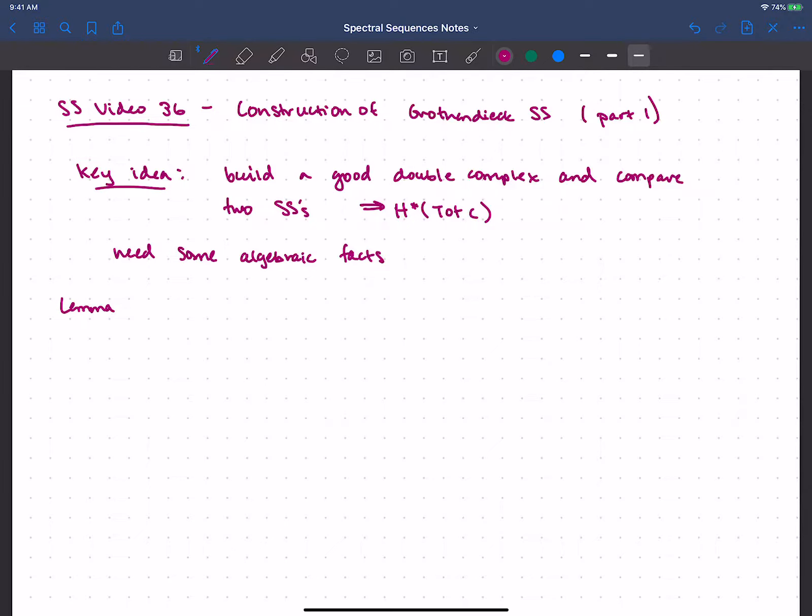So the first one you may have seen before, it's common in a course on homological algebra, so this is called the Horseshoe Lemma. This says that if you have a short exact sequence in any abelian category with enough injectives, and the whole point of having enough injectives is that I want some injective resolutions, so I'm going to have an injective resolution of A, and an injective resolution of C.